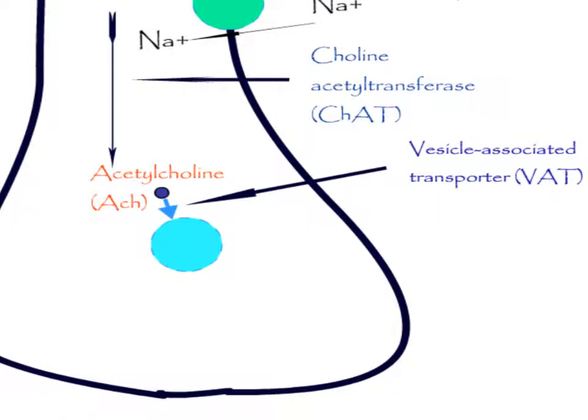Once synthesized, acetylcholine is transported from the cytoplasm into the vesicles by a vesicle-associated transporter (VAT). This antiporter can be blocked by the research drug vesamicol.